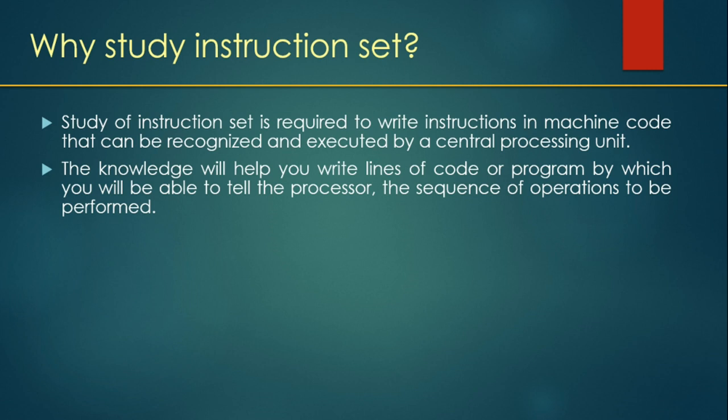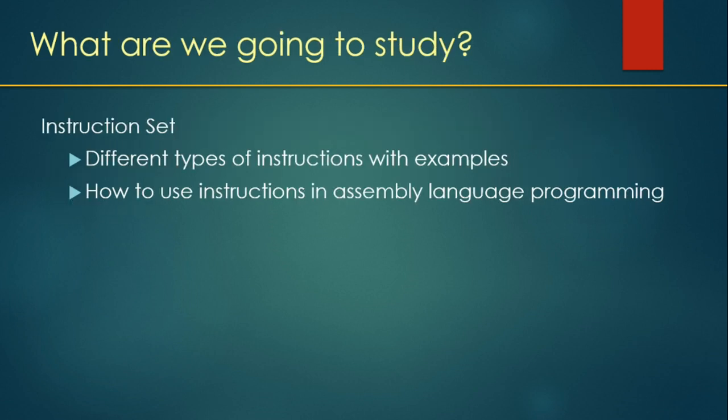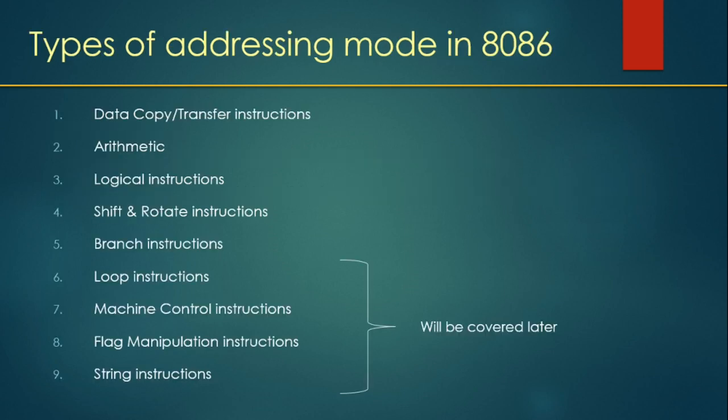In this section we are going to study different instruction types. We will see all the examples and how each instruction works and how the data flows. There are nine types listed: data copy/transfer instructions, arithmetic instructions, logical instructions, shift and rotate instructions, branch instructions, loop instructions, machine control instructions, flag manipulation instructions, and string instructions.